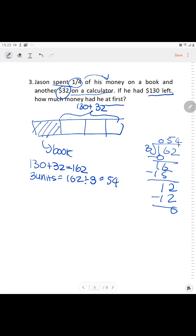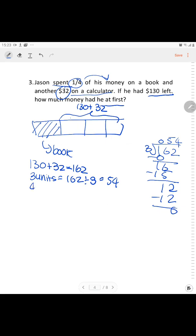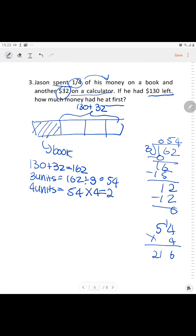Each unit is $54. The question asks for 'at first', which means 4 units. 54 times 4 — let's do the multiplication. You get $216. So Jason had $216 at first.